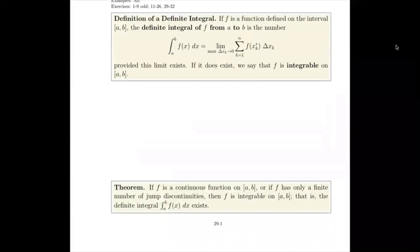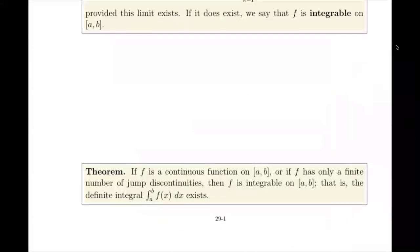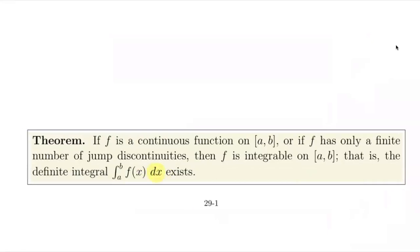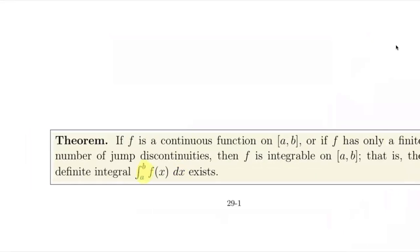Our next theorem is that if f is a continuous function on a to b, or if f has only a finite number of jump discontinuities, then f is integrable on a to b — that is, the definite integral from a to b of f of x exists. The differential dx, as we've always known it, appears in the notation: the integral from a to b of f of x dx, or equivalently, f of x with respect to x.